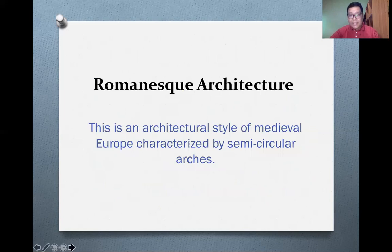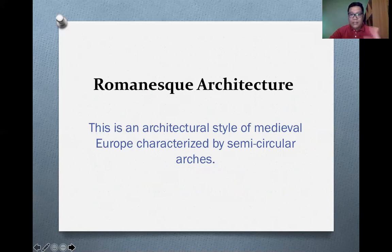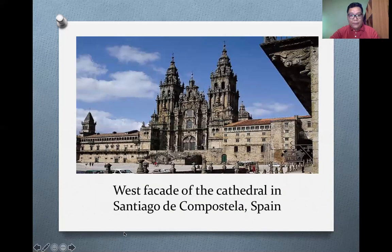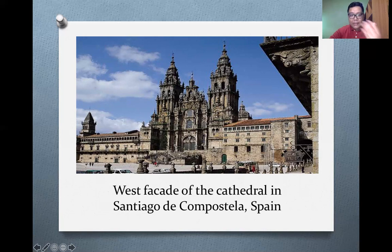We also have Romanesque architecture, an architectural style of medieval Europe characterized by semi-circular arcs used in windows or entrances of structures. One good example is the west facade of the Cathedral in Santiago de Compostela in Spain. If you closely look at this structure, you can see semi-circular arcs in the windows and entrances — that is one feature of Romanesque architecture.